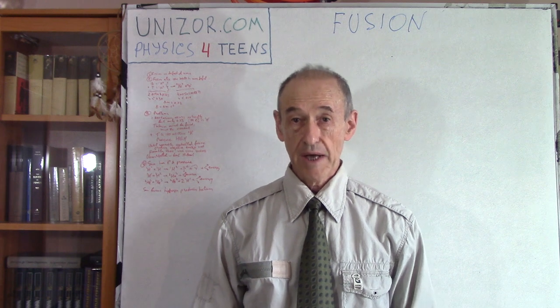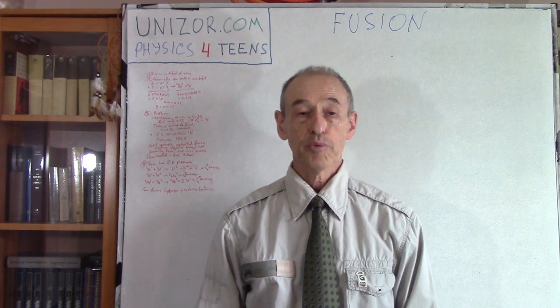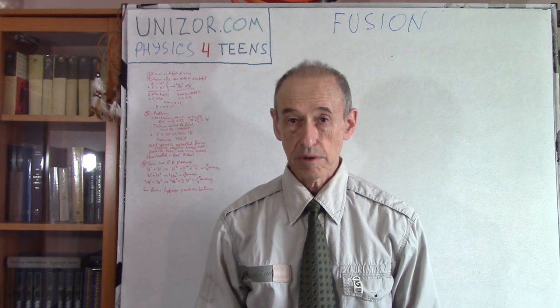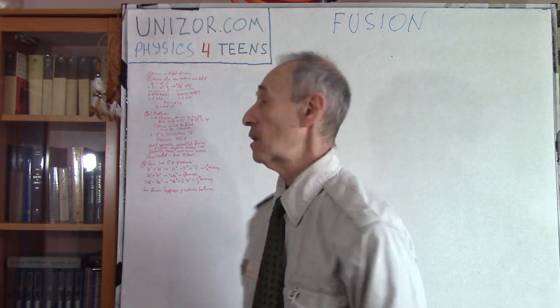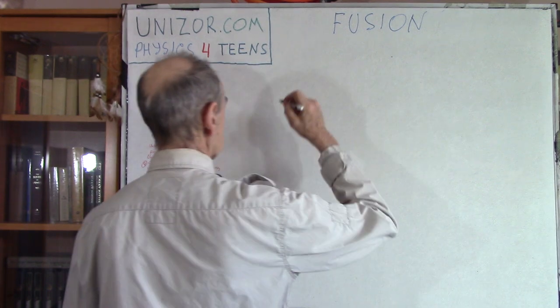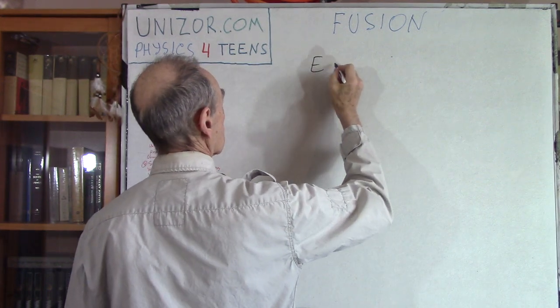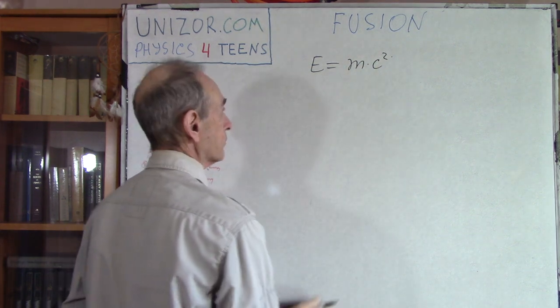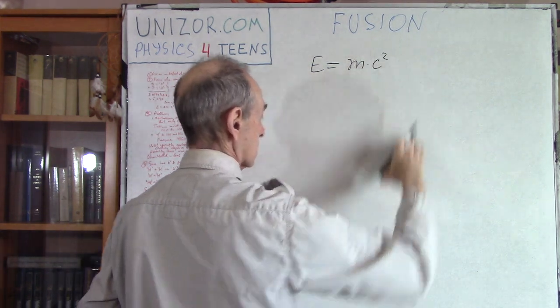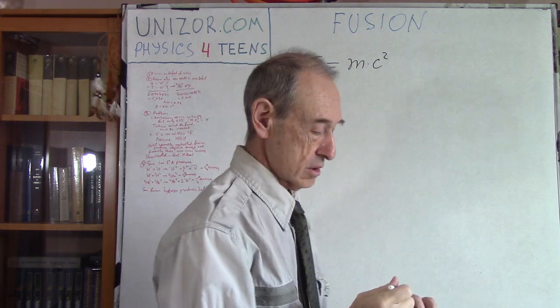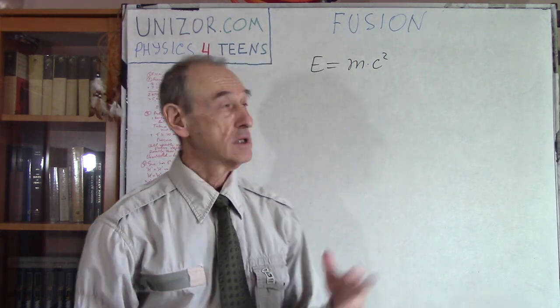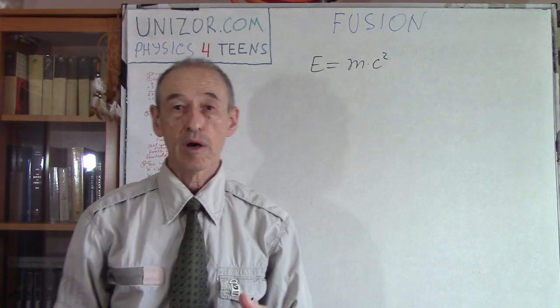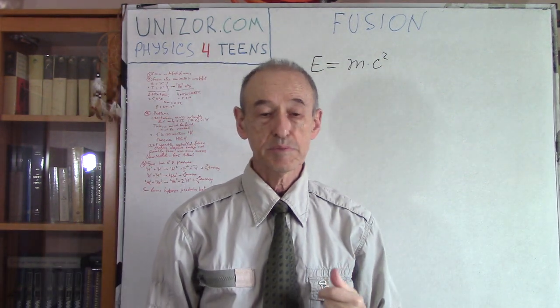It's called mass defect and the problem is that this extra mass which seems to disappear is actually converted into energy, which is based on the famous formula of Einstein which connects the total amount of energy concentrated in mass as mass times the square of the speed of light in vacuum, E=mc².